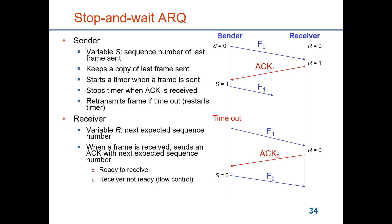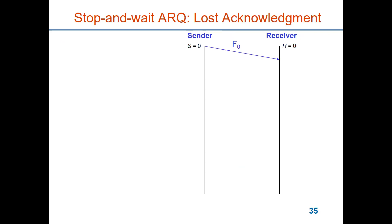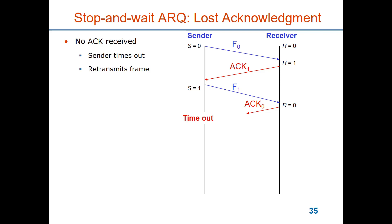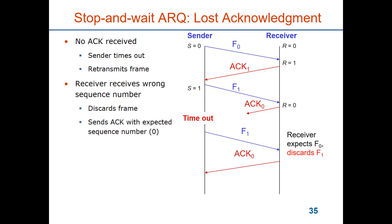Let's see what happens if an acknowledgement is lost. We start in the same way as before but now the acknowledgement for frame 0 is lost. There is a timer that was set when frame 1 was sent, and after some time there will be a timeout and frame 1 will be resent. However, the receiver has already received frame 1. Its state variable is 0 and when it sees frame 1 again it will simply discard it and send an acknowledgement for frame 0. The protocol works as expected — it handles loss of frames and loss of acknowledgements by timeout in the same way.